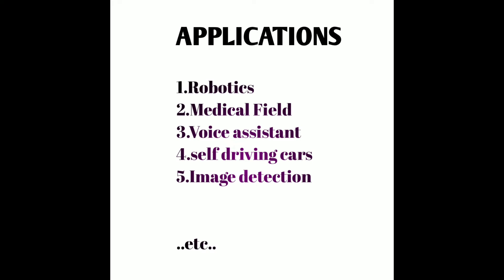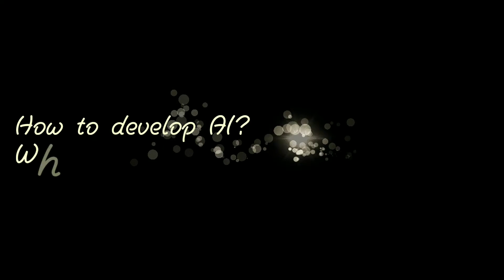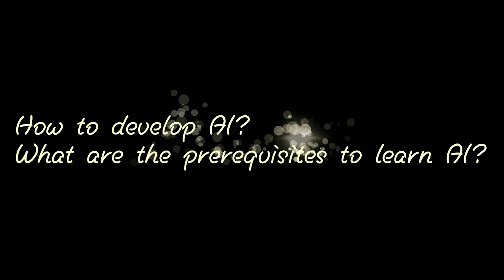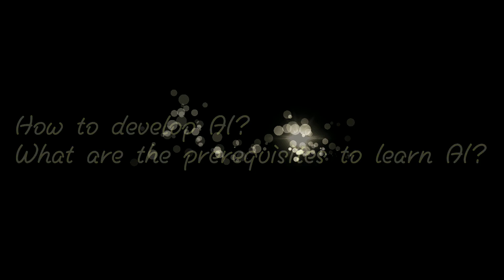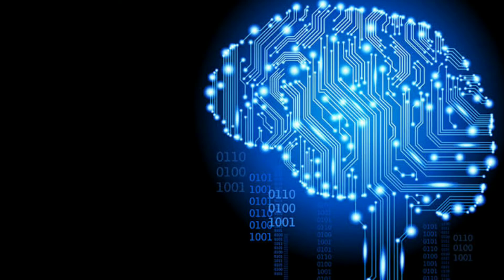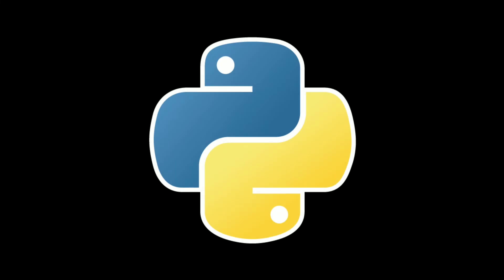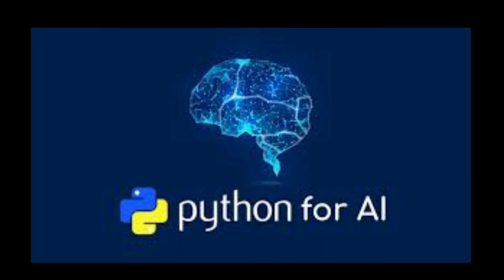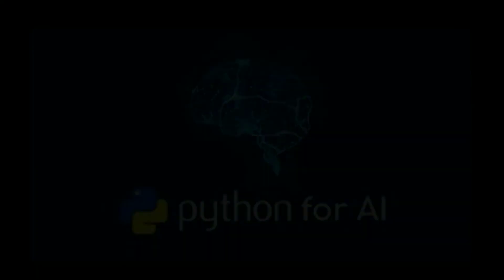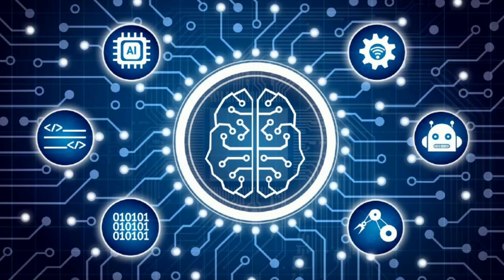Now I will explain how to develop artificial intelligence and what the prerequisites are to learn AI. To develop AI, we use Python — a simple, powerful, and fun programming language. It is easy and powerful, and used to develop AI because it has built-in libraries and functions. You can also get into data science and machine learning using Python.